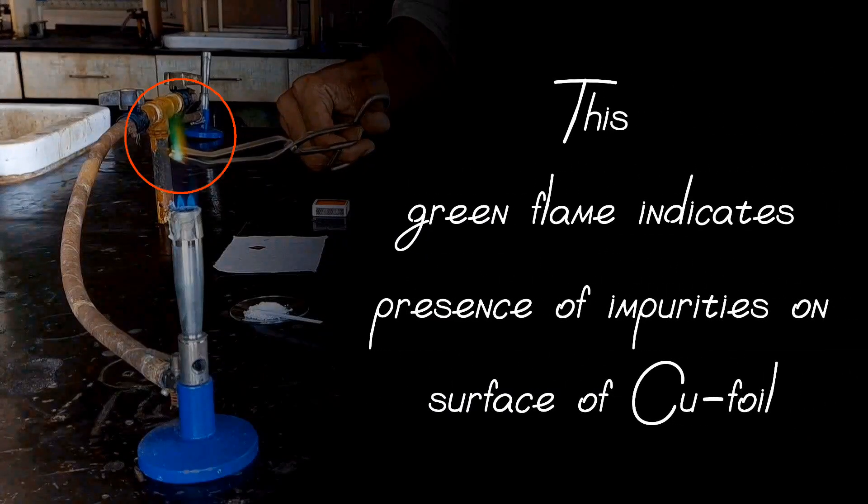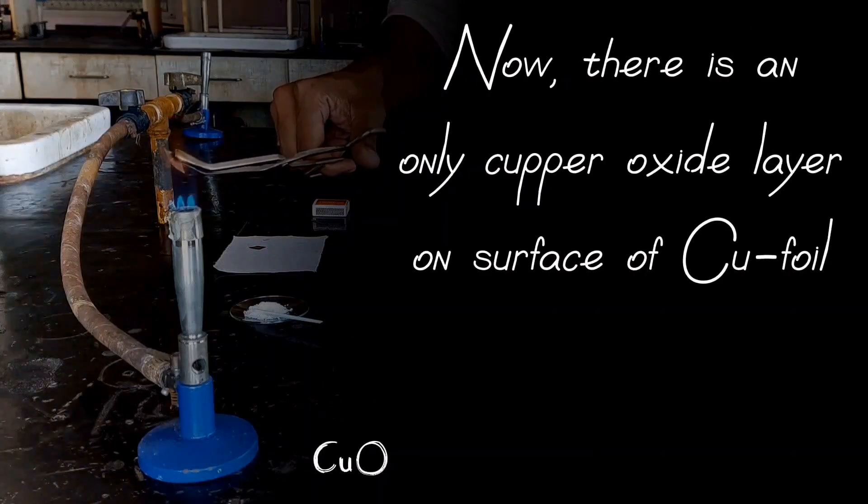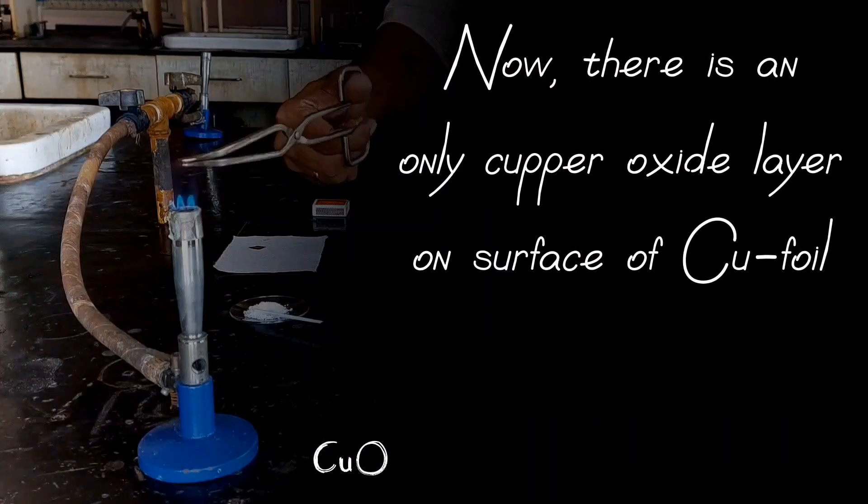This green flame indicates presence of impurities on surface of copper foil. Now there is only a copper oxide layer on surface of copper foil.